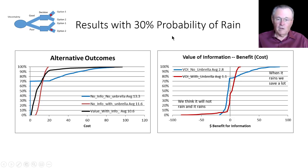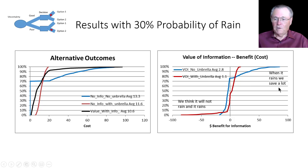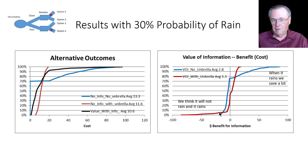With SIPMath, we can also talk about the distribution of the value of information, shown over here. The value of information with no umbrella is shown in blue — when it rains we save a lot. If the reference case is with no umbrella, you have to clean your clothes. On the other hand, if the reference case is with the umbrella, there's a cost because there's only an 80% probability of the information being correct, so there is some downside — we think it's not going to rain and it does, and we have to have our clothes cleaned. These differences correspond to the differences in the alternatives.